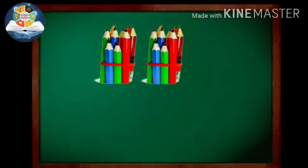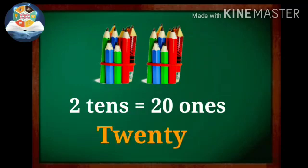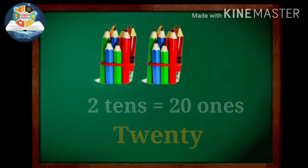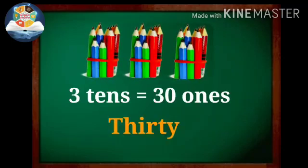Look, now there are two groups of tens. Hence two ten pencils mean twenty pencils. Three tens mean thirty pencils.